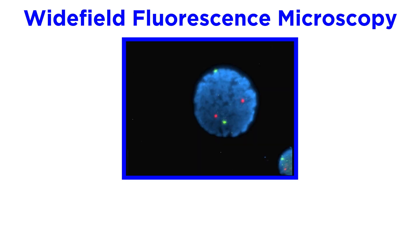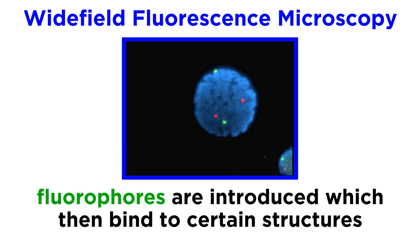The initial form of fluorescence microscopy that was developed, which is still used today, is called wide-field fluorescence microscopy. For wide-field microscopy, specimens are either fixed in place or left alive and functioning. The fluorophores are introduced to the specimen and can be modified in multiple ways so that they bind to certain structures.